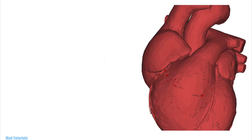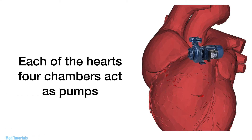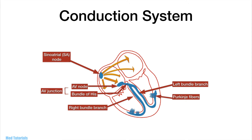Each of the heart's four chambers functions as a pump, with the left ventricle being the most powerful. It's essential that the ventricles are relaxed as the atria pump blood into them — it would be disastrous if the atria and ventricles contracted at the same time. This is why the conduction system of the heart is complex, allowing for systematic contraction of the atria followed by the ventricles.